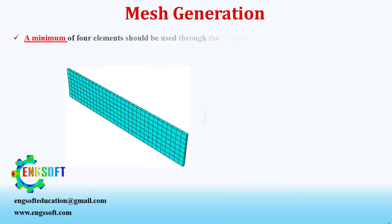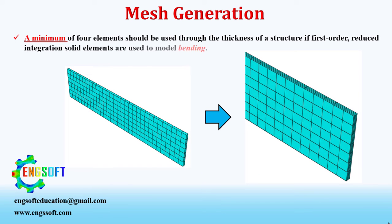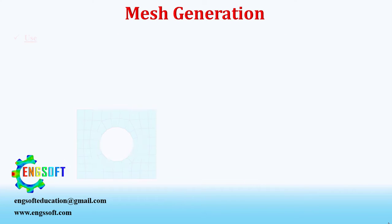As the third recommendation, a minimum of four elements should be used through the thickness of a structure when first order reduced integration solid elements are used to model bending. Other guidelines can be developed based on experience with a given class of problem.